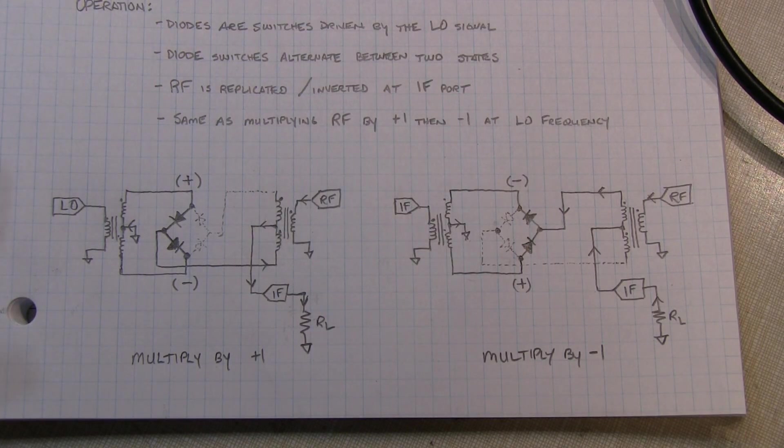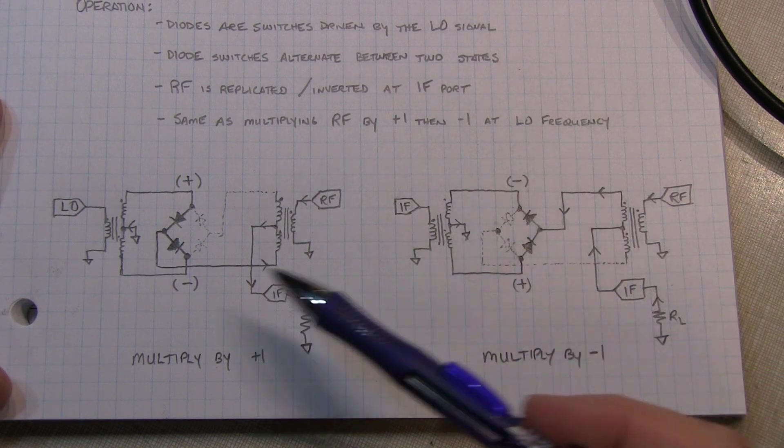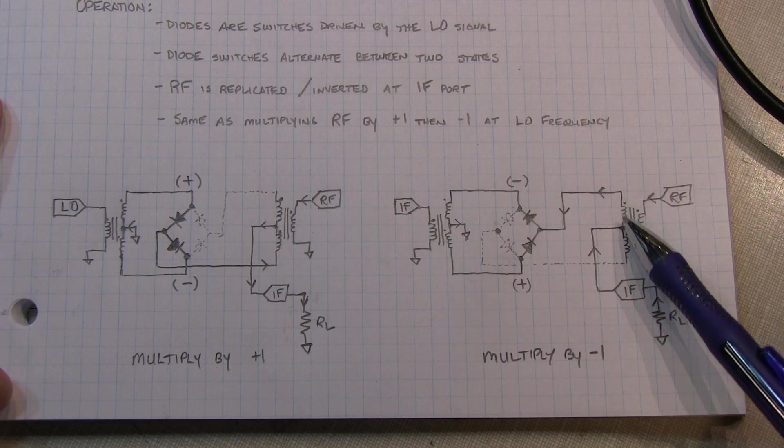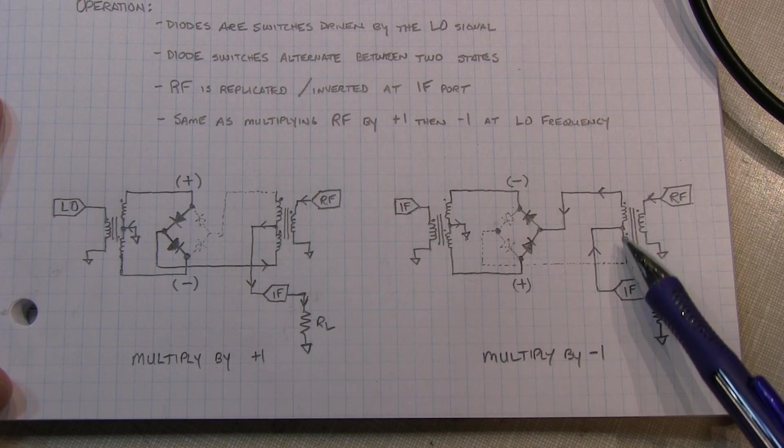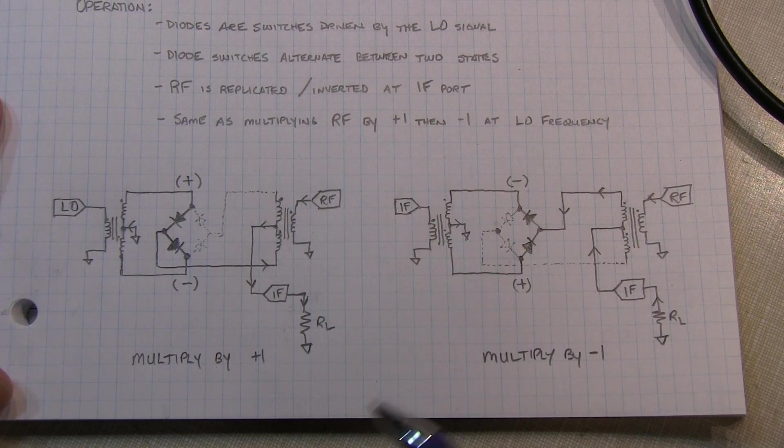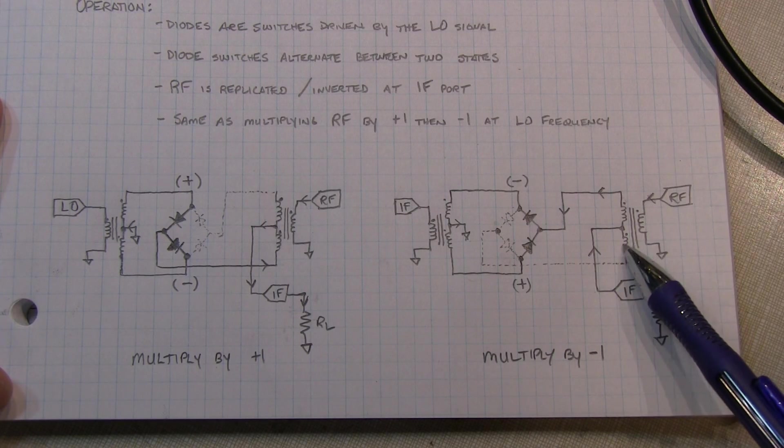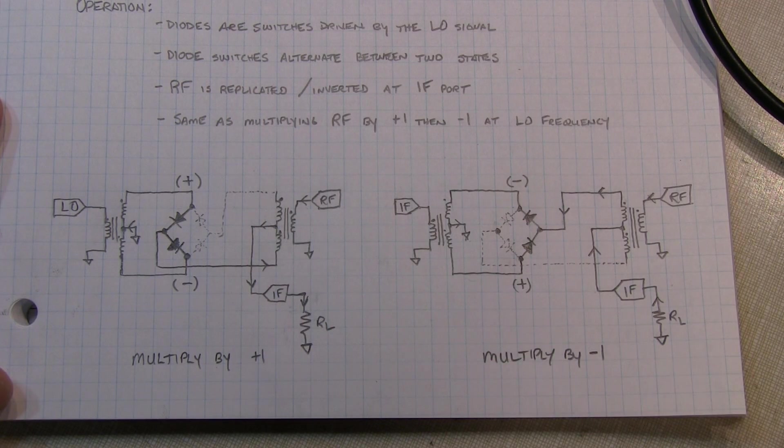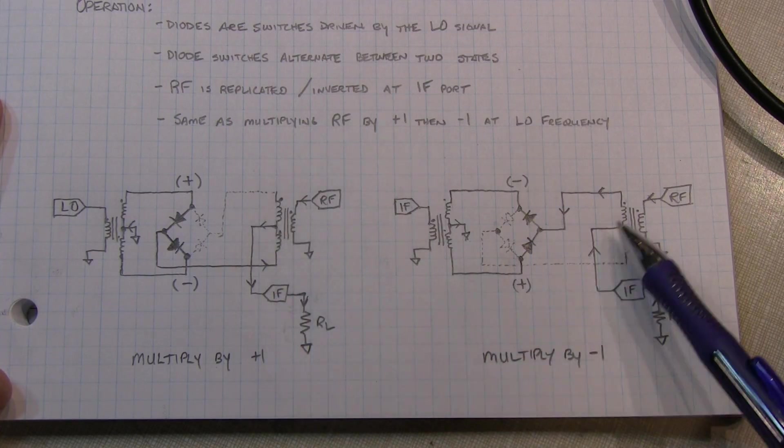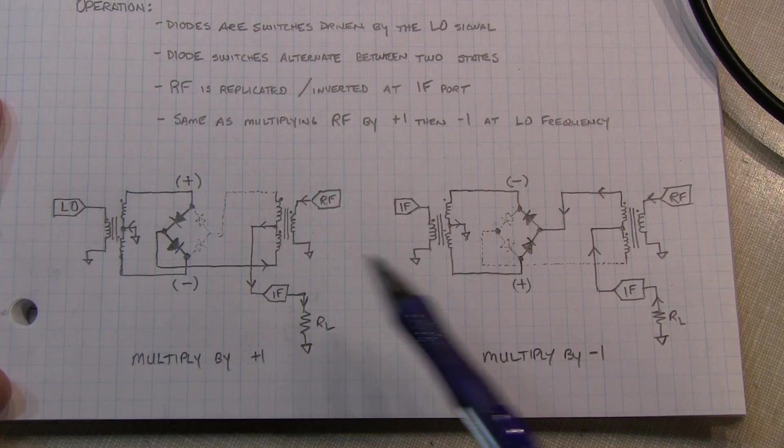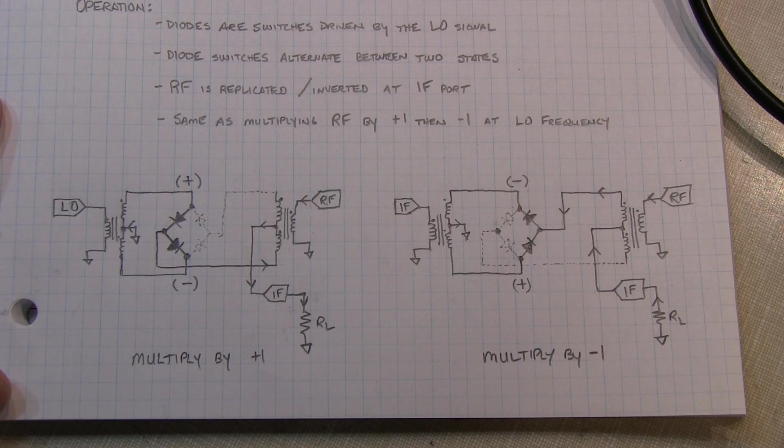One more thing that's interesting to note is that in either of these two states, only one half of the winding is used on the RF transformer here. So it really isn't a four to one transformer. It's really just a one to one transformer with the other half not being used. We're just switching which half of that transformer is being used during each half cycle of the local oscillator signal.